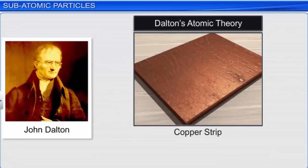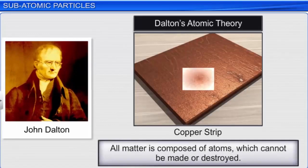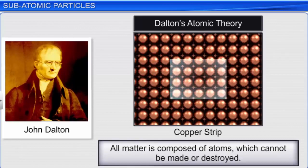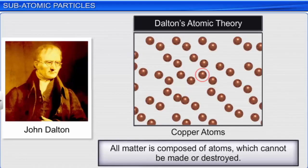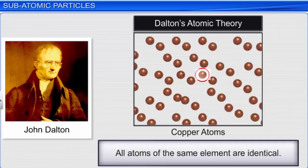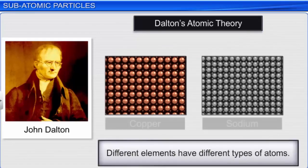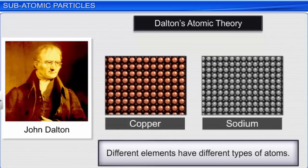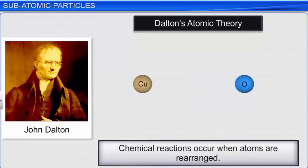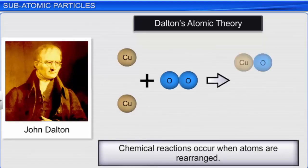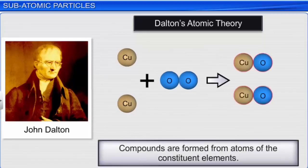Dalton proposed that atom is the ultimate particle of matter. This theory is called Dalton's atomic theory. It postulates that all matter is composed of atoms that cannot be made or destroyed. All atoms of the same element are identical. Different elements have different types of atoms. Chemical reactions occur when atoms are rearranged.